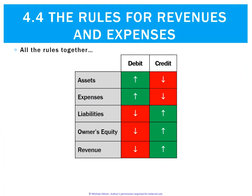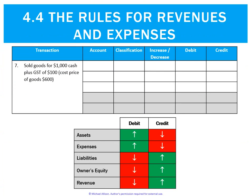Here are all the rules together so far: assets and expenses go up on the debit side, and liabilities, owner's equity, and revenues go up on the credit side.